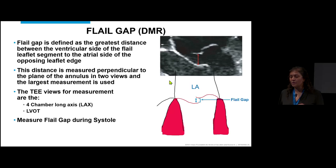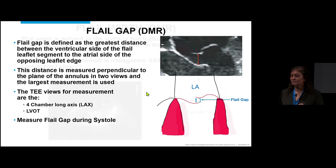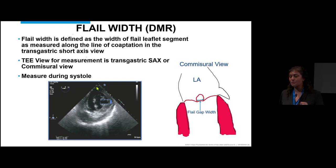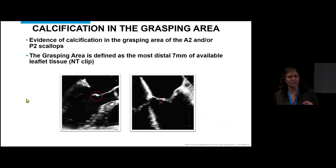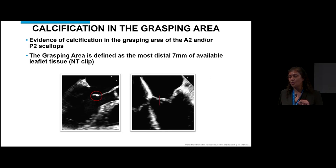The flail gap is measured from the long-axis view during systole — that's where the MR jet takes off. Flail width can be measured from the transgastric short-axis or the commissural view. Calcification is also important — we're grabbing the leaflets, so calcification where you're grasping won't take well to the clip arms. We look at the distal 7 mm of both A2 and P2 for calcification; on TEE it can be difficult to differentiate calcification from valve thickening and fibrosis.